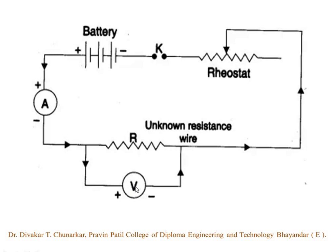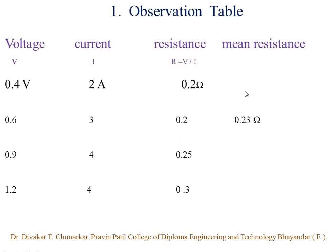So, in this observation table, we have columns: voltage, current, resistance, and mean resistance. First, we apply 2 ampere current using the rheostat; at that time, 0.4 volt potential is applied. So we get resistance R equal to V upon I, that is 0.4 V upon 2 A, so that is 0.2 Ohm. When we increase to 3 ampere current, the voltmeter shows 0.6, so resistance value is 0.2 Ohm. When we apply 4 ampere current, the voltmeter shows 0.9 volt, so 0.9 upon 4, we get 0.25.